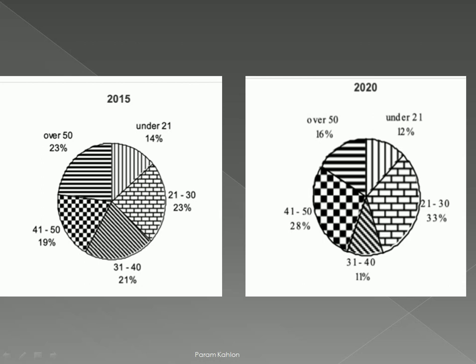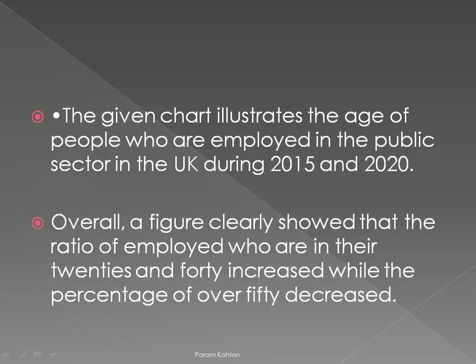There are two figures. The first one is that the age group starts with under 21 and finishes with over 50. Under 21 is a decrease, over 50 ratio is also a decrease, and the 31 to 40 age group is also a decrease in 2020. This means two age groups show a ratio increase in employment in the public sector in the UK during 2015 and 2020.